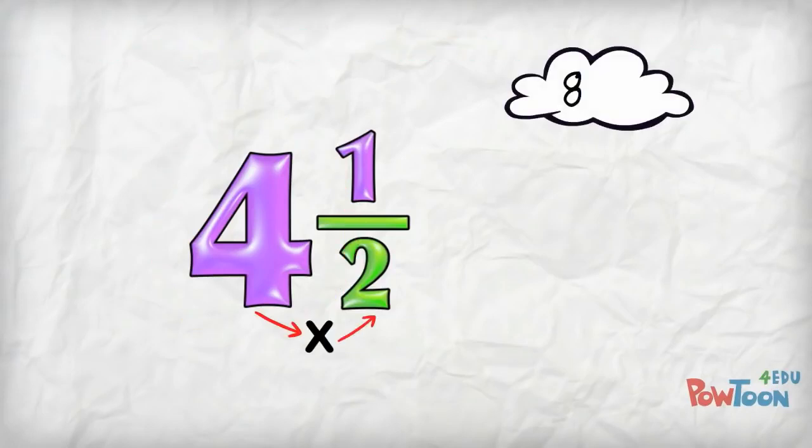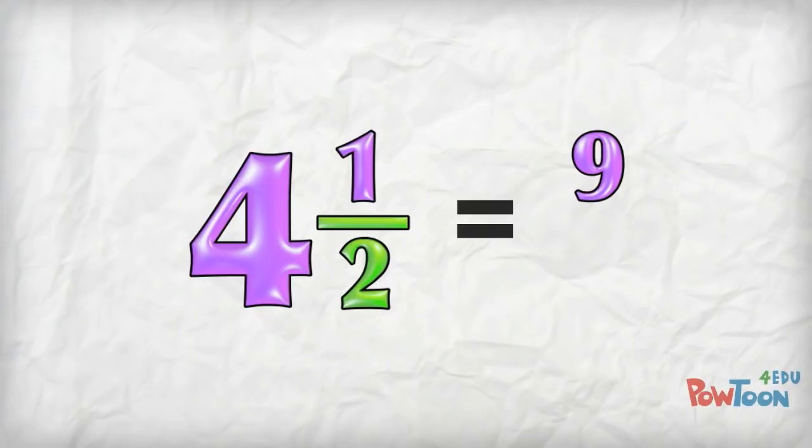And I have another part here to add in from the numerator of 1. So 8 plus 1 is 9. That's our number of parts, so that's our numerator. I use the same denominator we started with—2—and I'm done! 4 and a half is the same as 9 over 2.